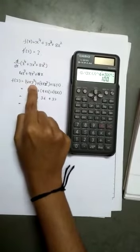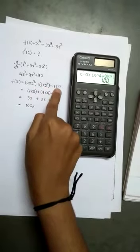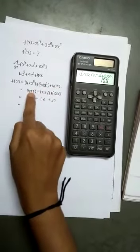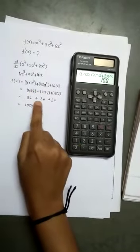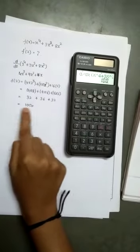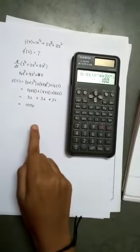4 times 2 raise to 3 plus 9 times 2 raise to 2 plus 16 times 2 is equal to 4 times 8 plus 9 times 4 plus 16 times 2 is equal to 32 plus 36 plus 32 equal to 100. We get the answer at the same 100.